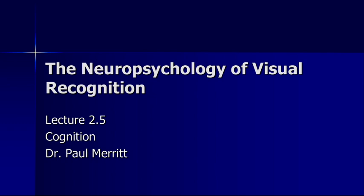Hello and welcome to lecture 2.5 in this online cognition series. We will be talking today about the neuropsychology of visual recognition. Primarily we'll be talking about object recognition. The reason I talk about this in this particular course is it illustrates so much about the pattern recognition process that fits in with some of what we've already been discussing. What we can learn about the cognitive process by looking at the brain itself — in particular, we're talking about individuals with different kinds of recognition disorders.